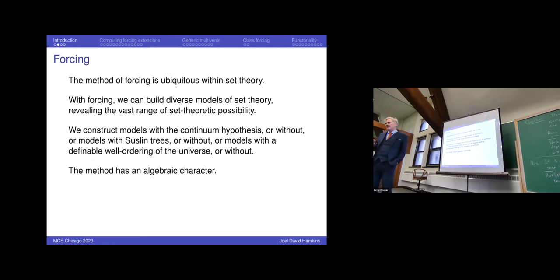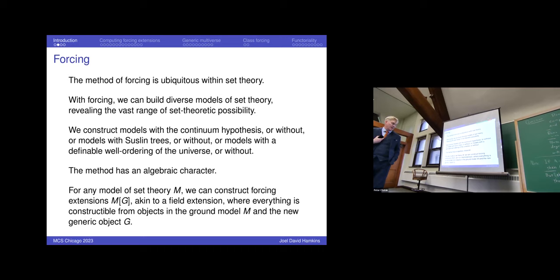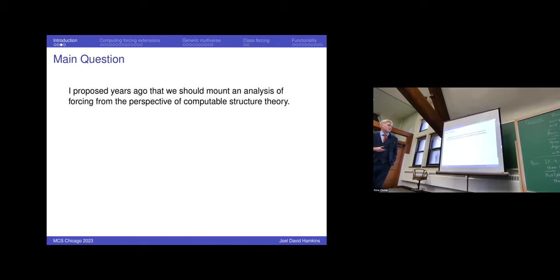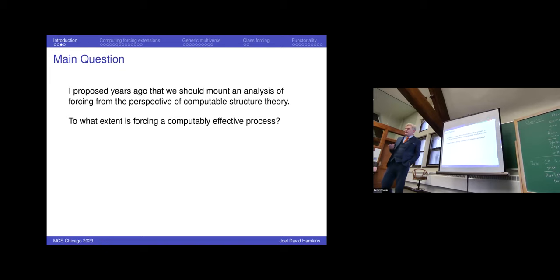We can make models of set theory with the continuum hypothesis or without, or with Suslin trees or without, all different kinds of models with definable orderings or without, all cheaply by forcing. But at the same time, the method has a kind of algebraic character. The question I want to address is something I proposed years ago: we should mount an analysis of forcing from the perspective of computable structure theory, doing the computable model theory of models of set theory, particularly thinking about forcing. To what extent can forcing be seen as a computationally effective process?